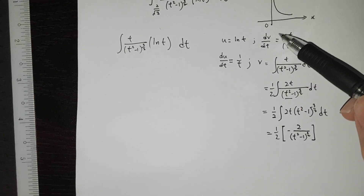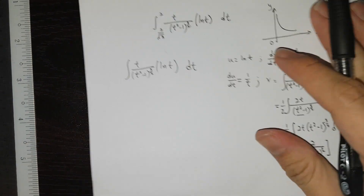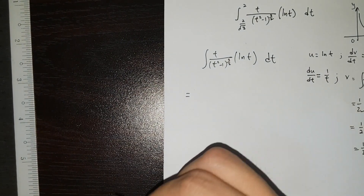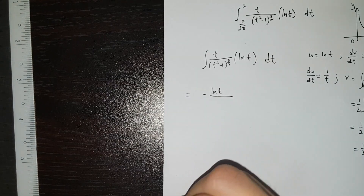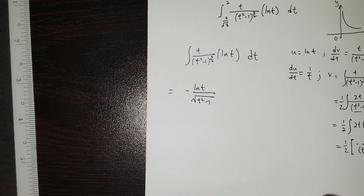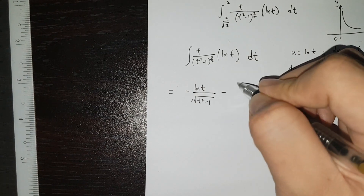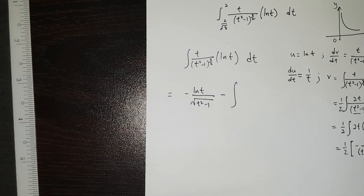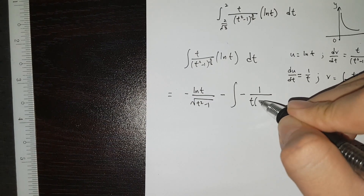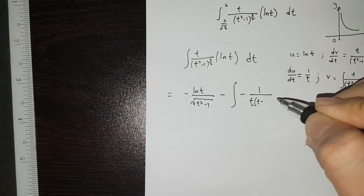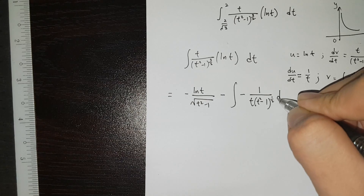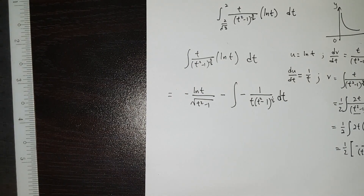Now that we have integrated this and have the expression for V, we can proceed with the integration by parts formula. So it's u times v, which is ln T over square root of (T squared minus 1), and then we subtract v times du/dt, which is negative 1 over T times (T squared minus 1) to the power of one half — that is, square root of (T squared minus 1).